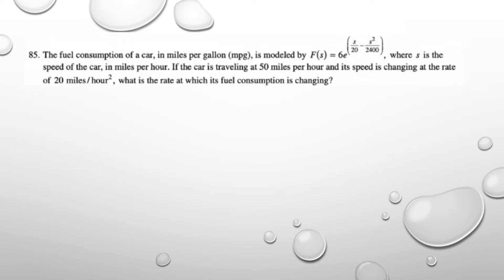We're asked to find the rate at which fuel consumption is changing. The fuel consumption of a car is modeled by F(S) equals 6 times e to the S over 20 minus S squared over 2400, where S is the speed of the car in miles per hour. We're also given that the car is traveling at 50 miles per hour and its speed is changing at the rate of 20 miles per hour squared.